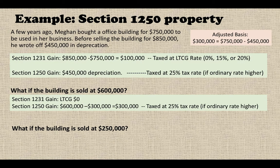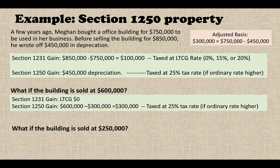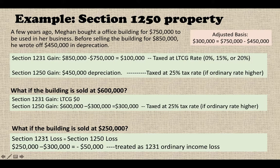What if the building is sold at $250,000? If she bought at $750,000 and now sells at $250,000, that's a significant loss. However, the adjusted basis is only $300,000, so she sells below her adjusted basis and recognizes a $50,000 loss. This will be treated as a Section 1231 ordinary income loss.